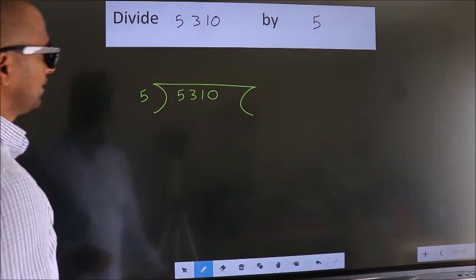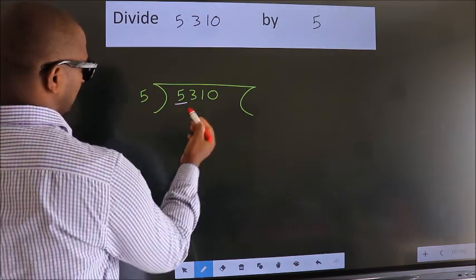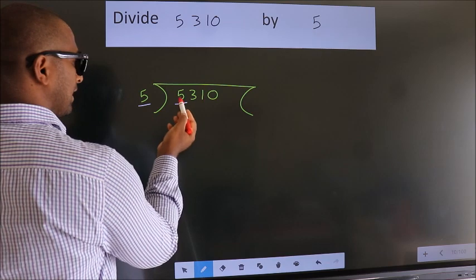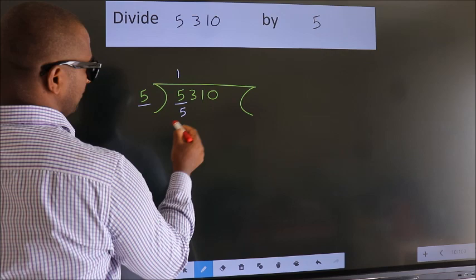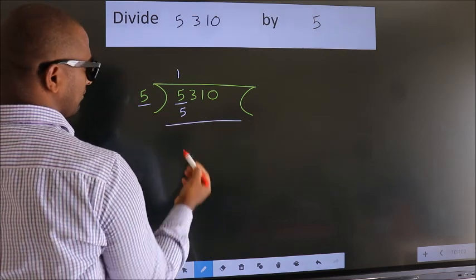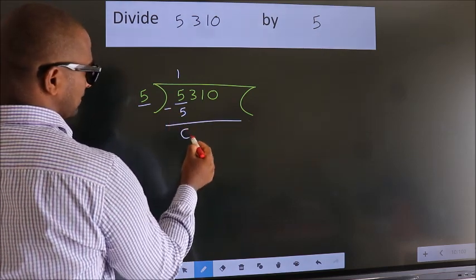Next, here we have 5 and here 5. When do we get 5? In the 5 table: 5 once is 5. Now we should subtract and get 0.